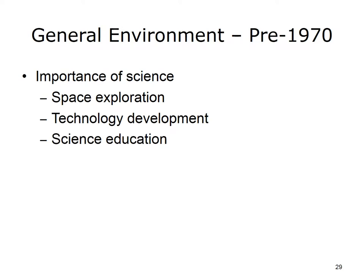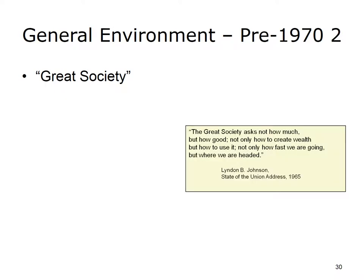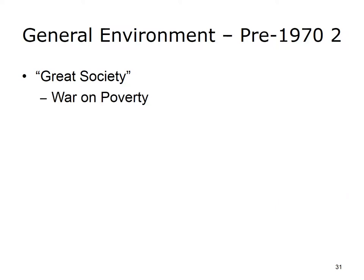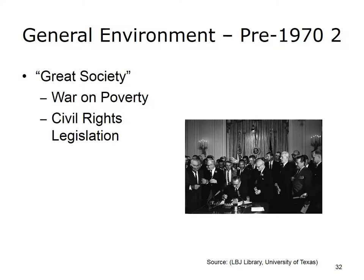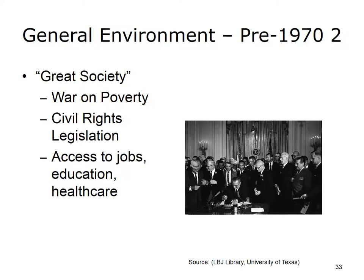There were fears that the Russians would get ahead of us in science education. This led to a huge effort to improve America's science education through increased funding. At about the same time, in the mid-1960s, the idea of the Great Society was introduced — President Lyndon Johnson's social program, where he declared war on poverty. There was also civil rights legislation. The picture shows President Lyndon B. Johnson signing the 1964 Civil Rights Act. Other legislation led to increased access to jobs, education, and most importantly, to health care. We will see that there are parallels in health care to what was happening in the general environment.